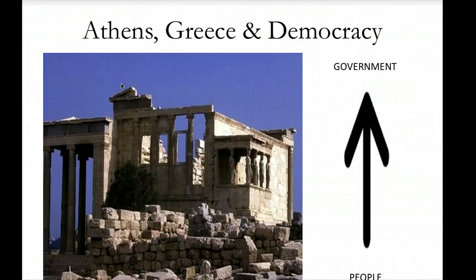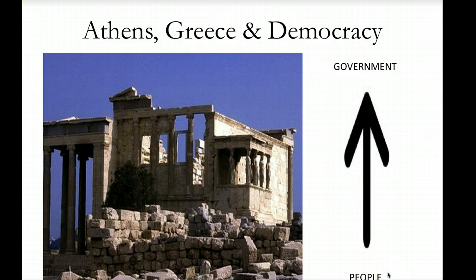First we look at Athens, Greece. Ancient Athens, Greece used what we call a democracy. A democracy is a form of government where the people are directly involved with the government and the decisions that have to be made. The people do not elect representatives — the people vote, and what the majority votes is put into action.